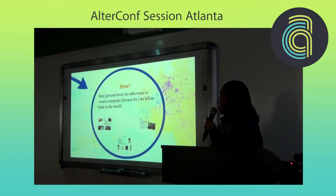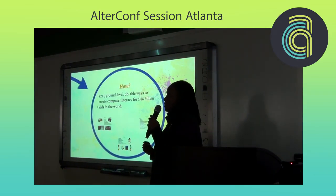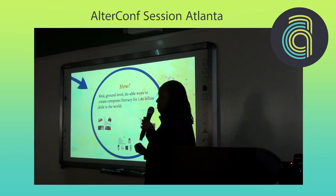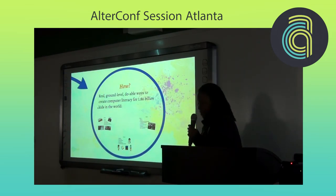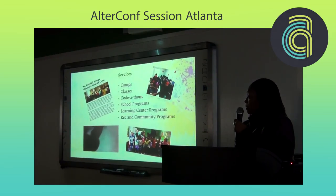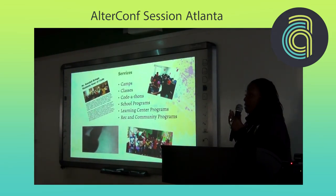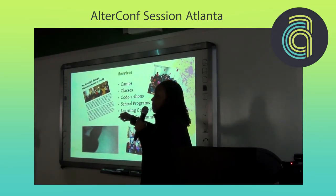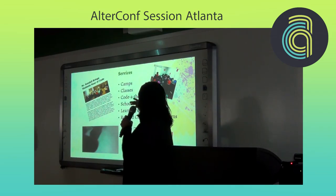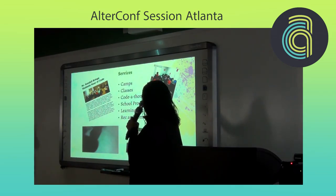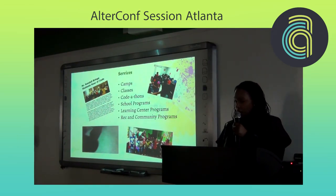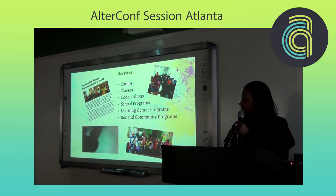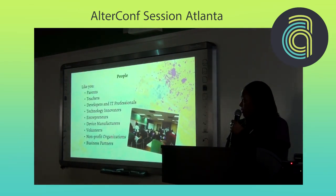So how do we create computer literacy for 1.86 billion kids around the world? The first way is through services. Someone mentioned sponsoring an hour of code — camps, classes, code-a-thons, school programs, learning programs, recreation center programs are all places we can help start to create computer literacy.